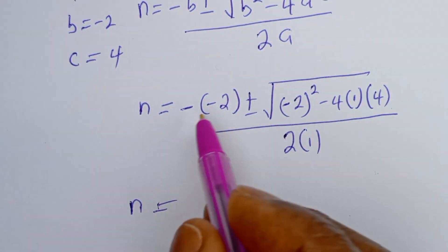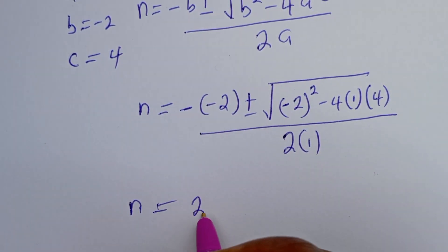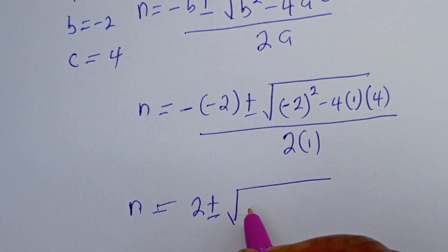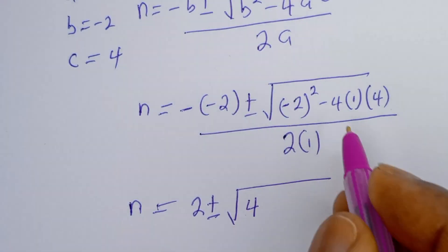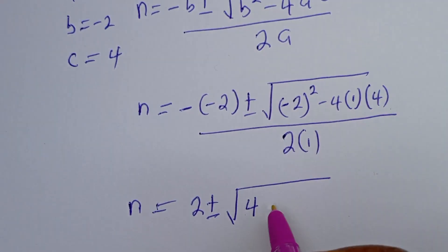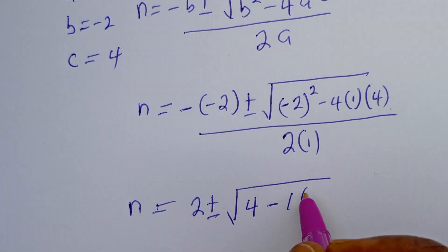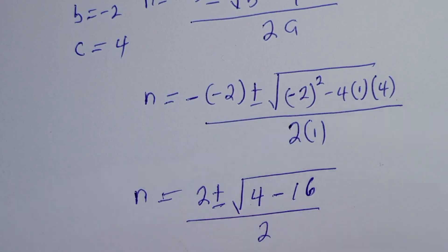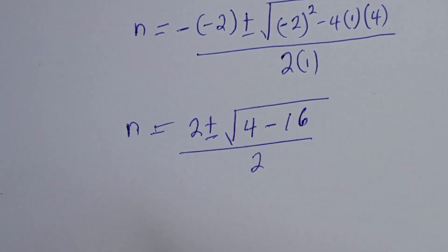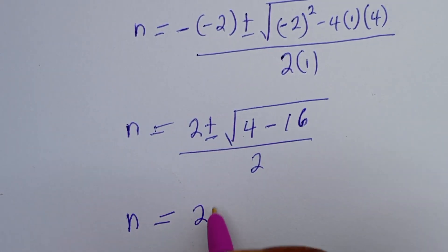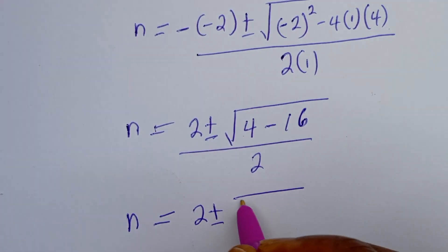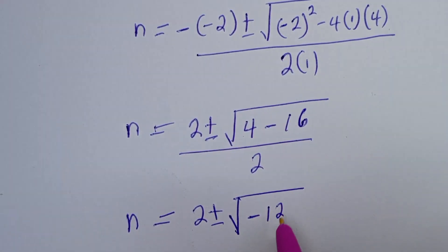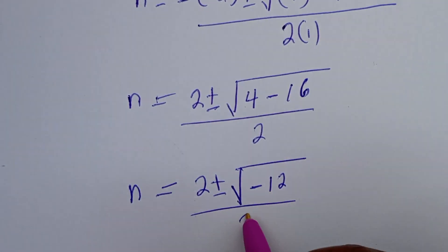We have n equals minus times minus 2, that is 2, plus or minus square root of: minus 2 squared, that is 4, then minus 4 times 1 times 4, that is minus 16, all over 2 times 1, that is 2. So n equals 2 plus or minus square root of 4 minus 16, that is minus 12, over 2.